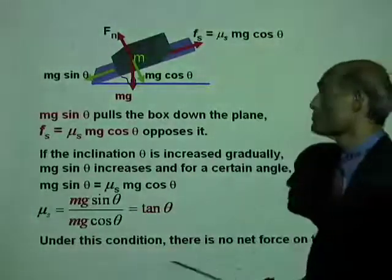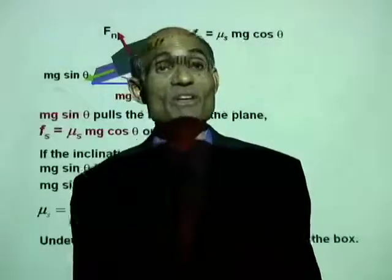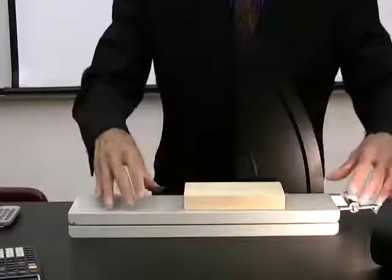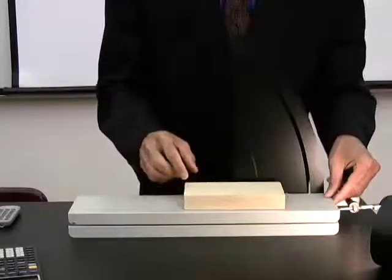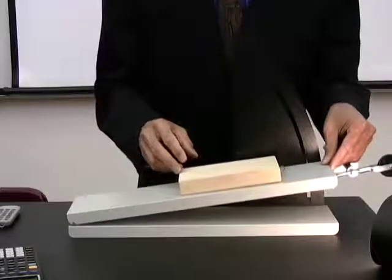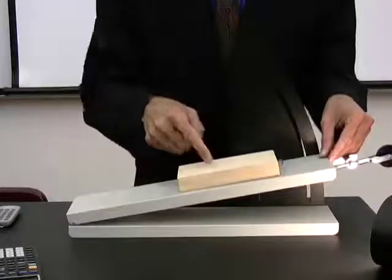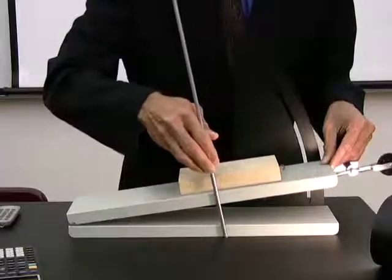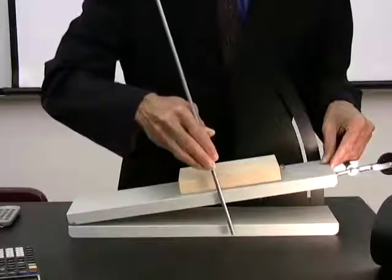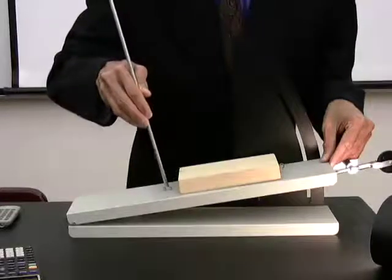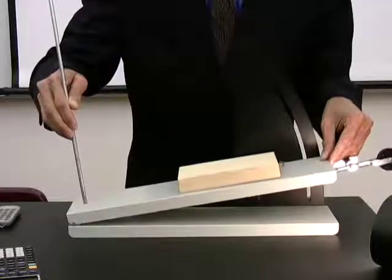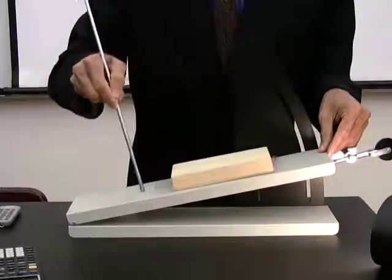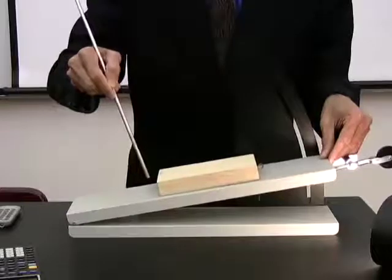Under this condition there is no net force acting on that block. Let's see if I can show that to you. Here I have that block of wood on an inclined plane. Watch as I increase the angle of inclination. The weight mg is acting vertically down. The normal force pressing the two surfaces together is mg cos theta, and the force pulling the block down the plane is mg sin theta. At the moment, mg sin theta is not sufficient to overcome the friction.